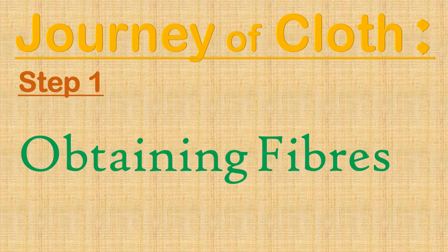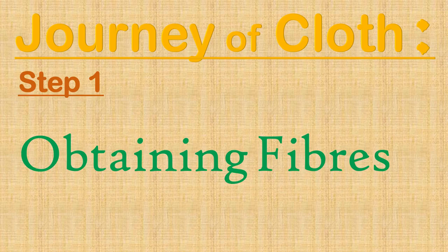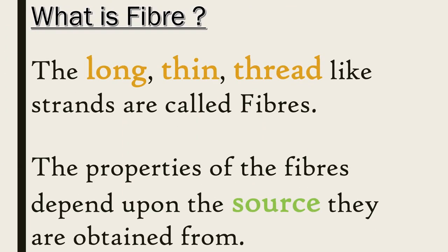As the name of the chapter suggests, in this chapter we will be covering the journey of a cloth starting from fiber to fabric. In this journey, the first step is obtaining fibers. Before learning about how and from where fibers are obtained, let us first learn what a fiber is. The long, thin, thread-like strands are called fibers. The properties of the fibers depend upon the source they are obtained from.